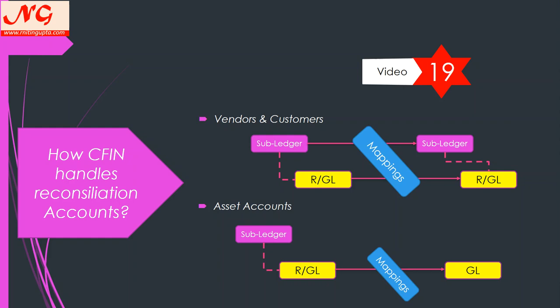The whole game is controlled by mappings and the mapping configuration. However, for asset accounts the story is different. Central Finance has a limitation that sub-ledger data is not being transferred to CFIN. When you post a sub-ledger document in ECC — for example, purchase of an asset, depreciation, or transfer — it goes to the GL in ECC, but when it comes to CFIN it only comes to the GL account. Sub-ledger and reconciliation account posting happens in ECC, but in CFIN it comes only at the GL level. The reconciliation account for assets must be mapped to a normal, non-reconciliation GL account in CFIN to allow posting.